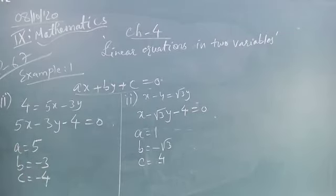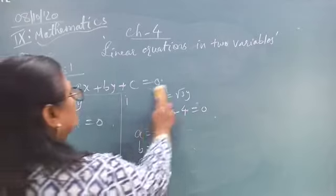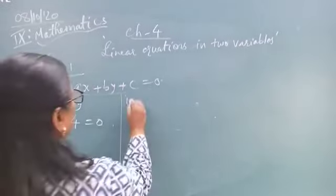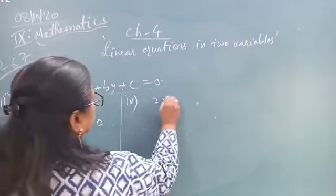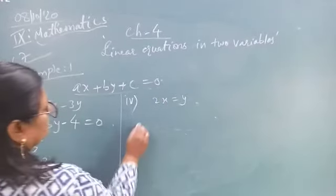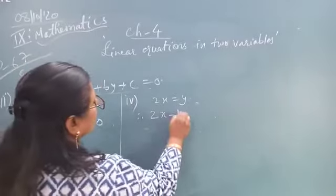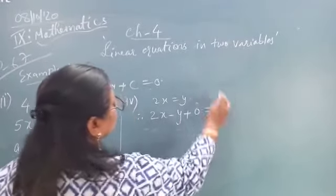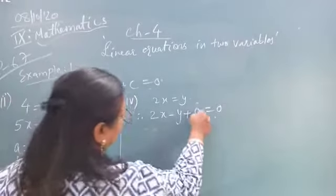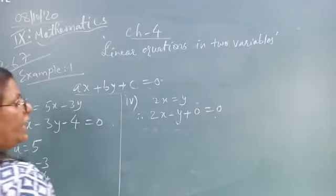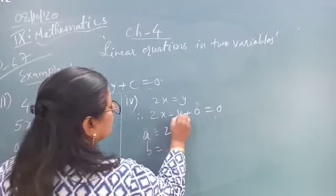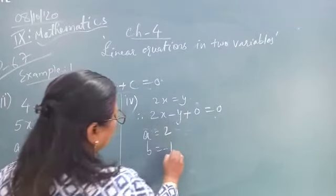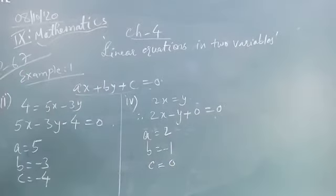Now equation number 4 is: 2X is equal to Y. Now convert into the standard form: 2X minus Y plus 0 is equal to 0. Because C is not given, so for our convenience we write 0. Now what is A? A is 2. B — only the minus sign is given, so you consider minus 1. And C is equal to 0.